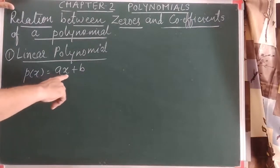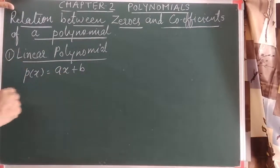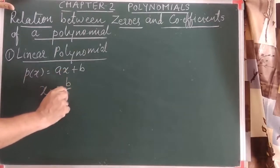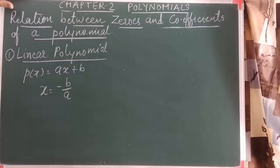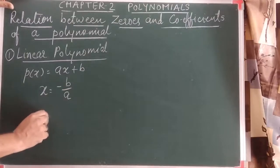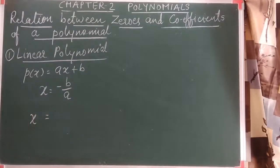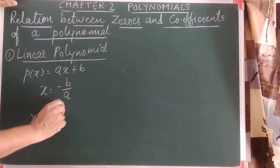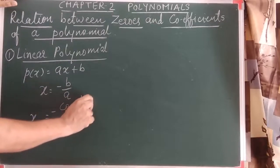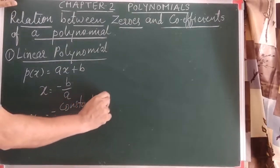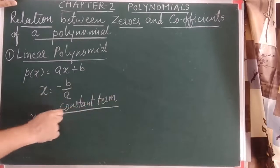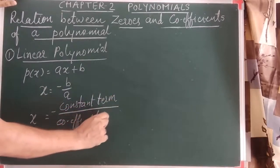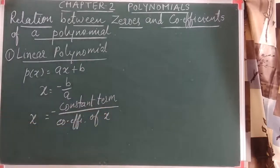If we make x the subject, we obtain the value minus b by a. So the zero of a linear polynomial is minus b over a — that is, minus the constant term divided by the coefficient of x. Let us understand this with a good example.